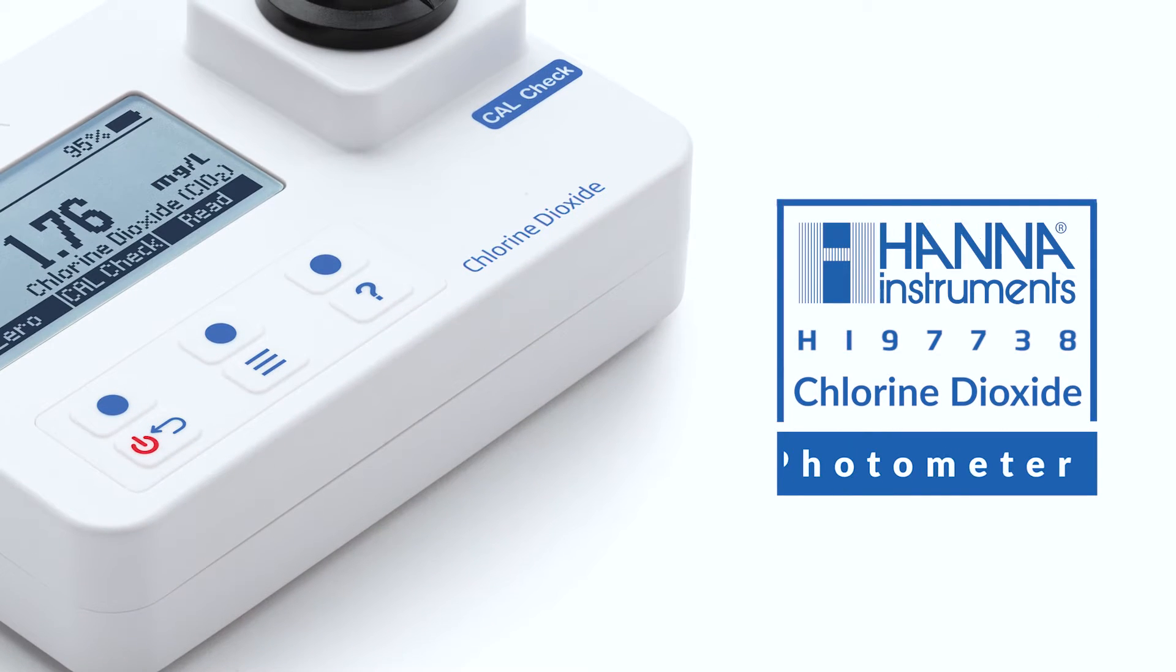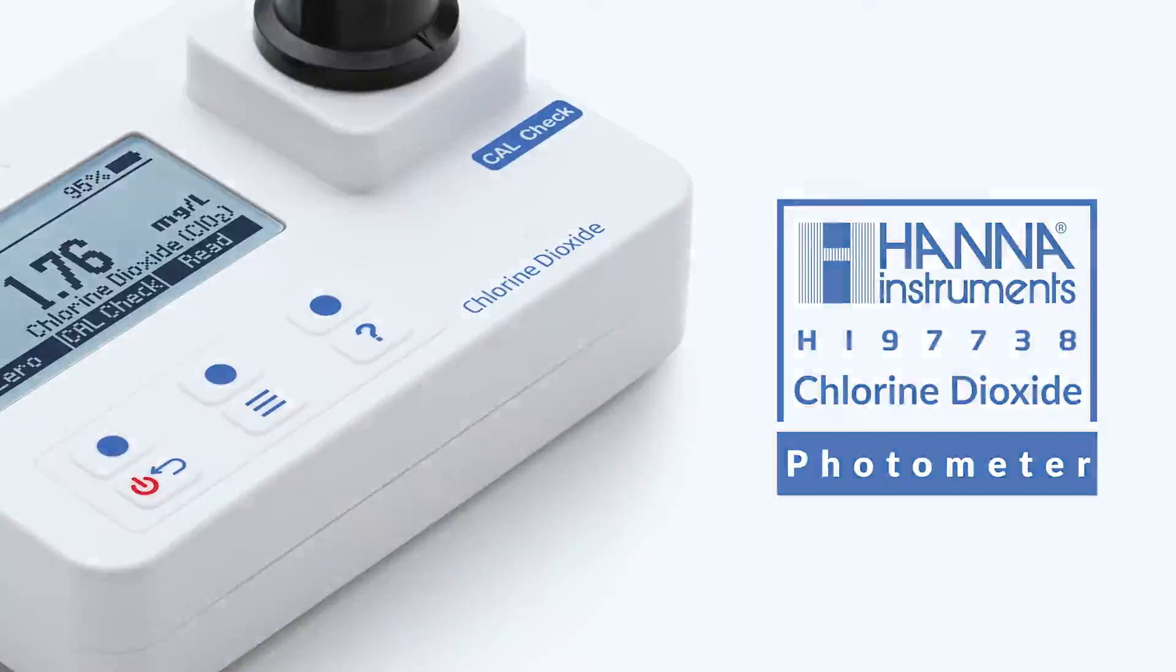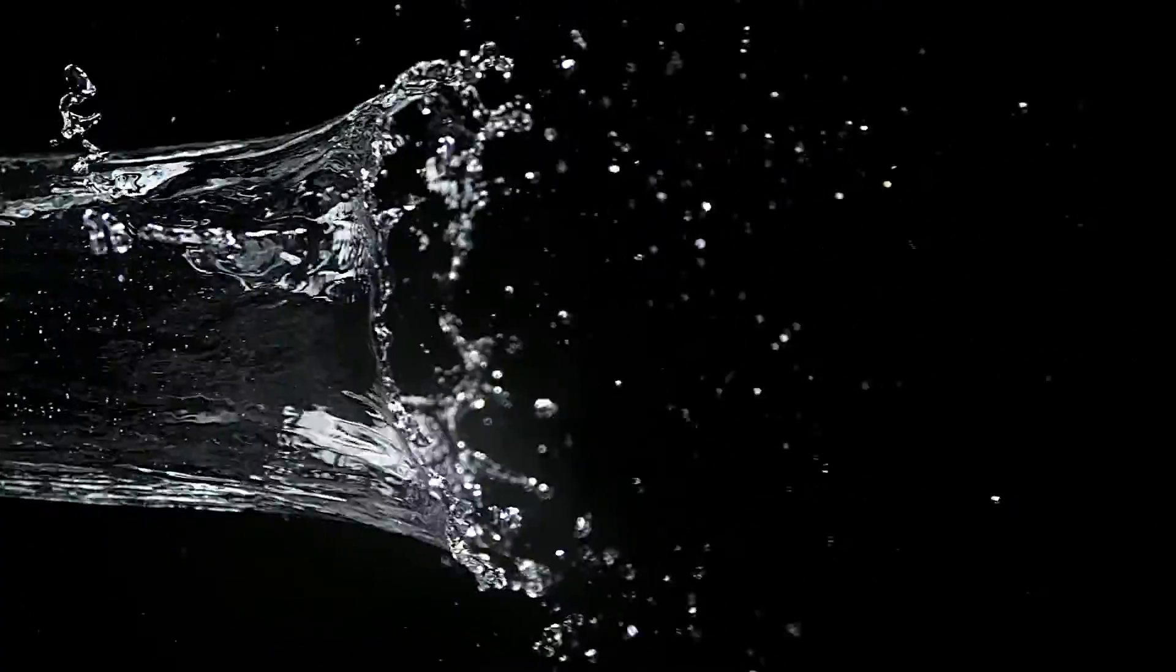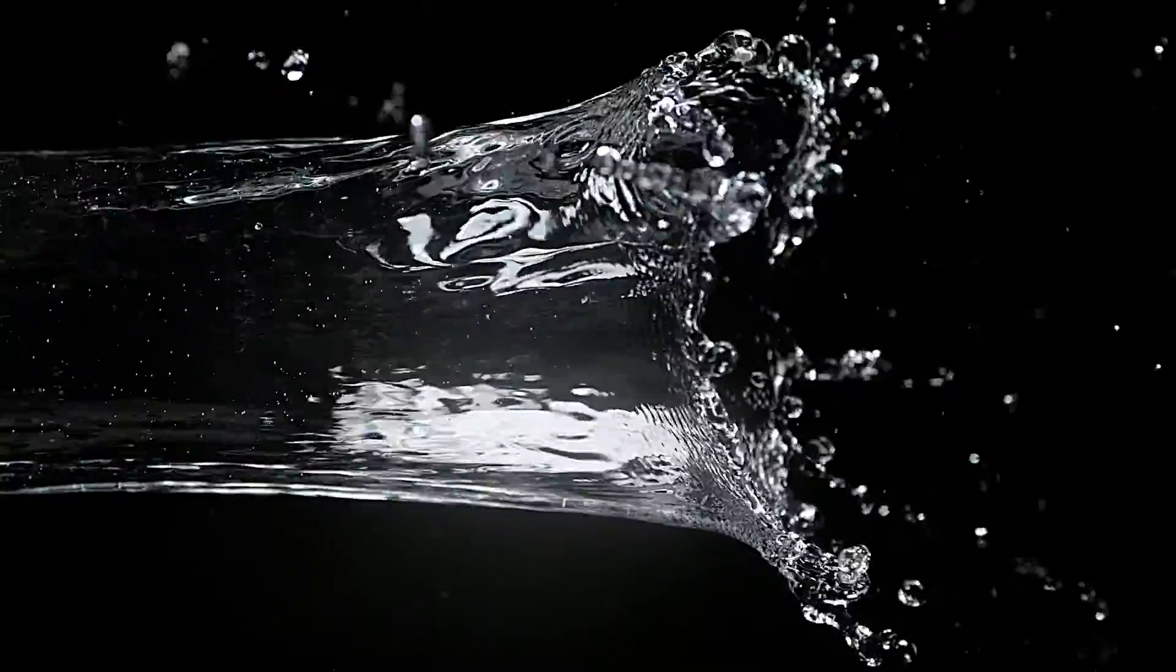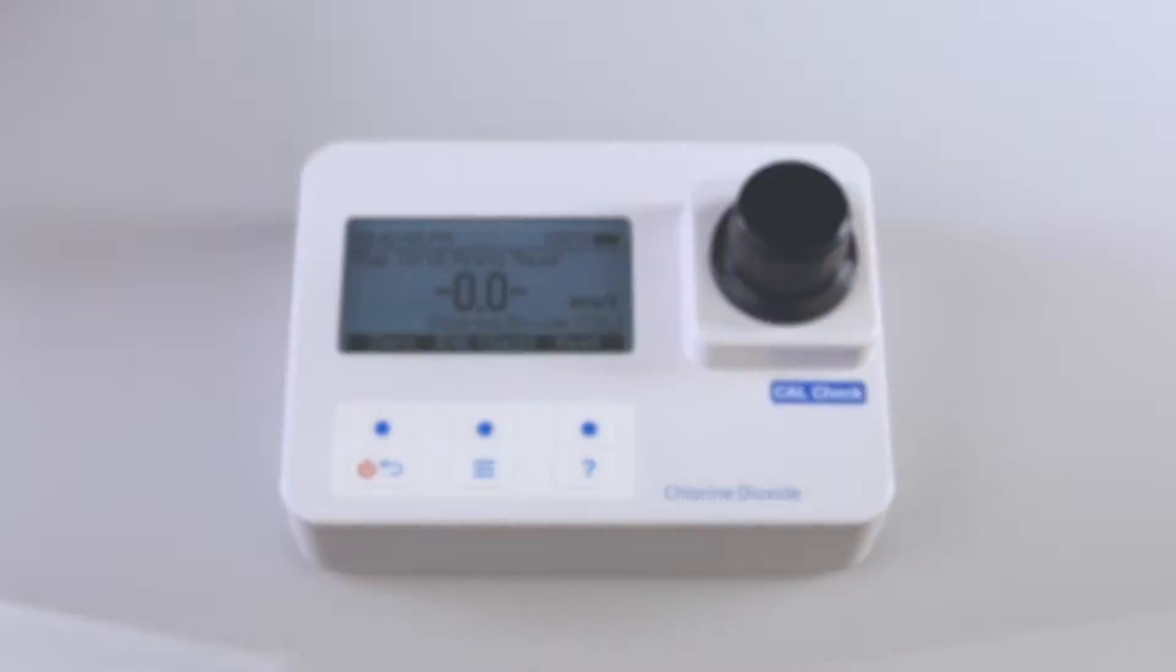The Hanna Instruments HI-97738 Chlorine Dioxide Photometer is an advanced portable photometer for the measurement of chlorine dioxide with a range of 0 to 2 milligrams per liter in water. Today we'll go over the proper use of the HI-97738.